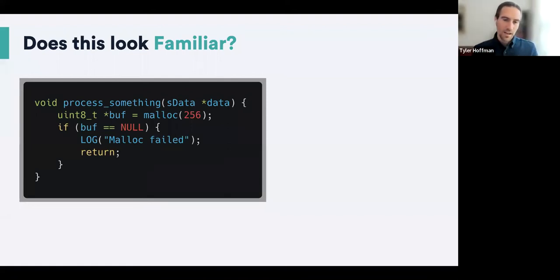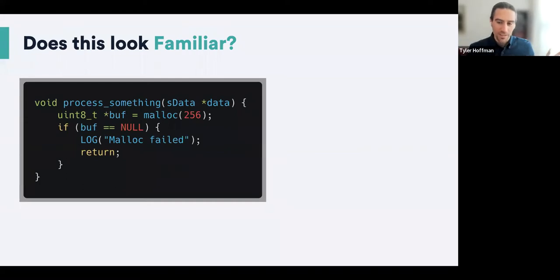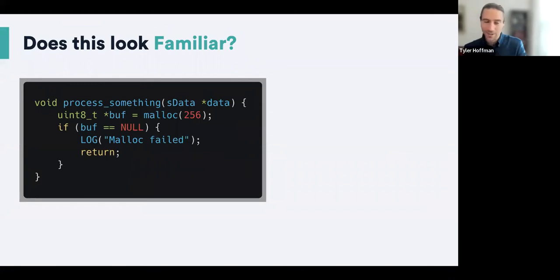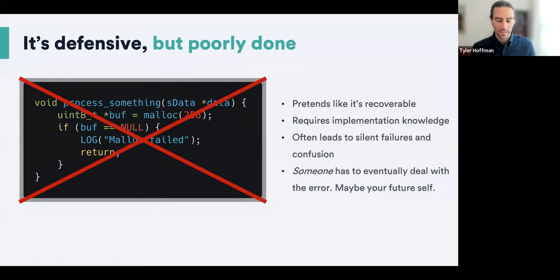We've all written code like this: we try to malloc a buffer, the allocation fails, and we handle it internally. We say this is not my problem — we're out of memory, so we return an error and bubble it up to the caller. We've either written code like this or worked in a codebase like this. It's frustrating. It's defensive programming in a way, but it's really poorly done.